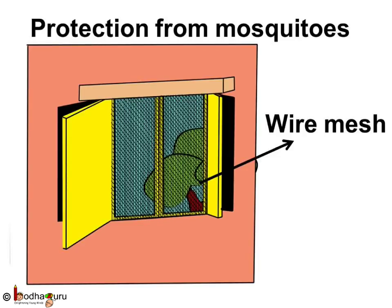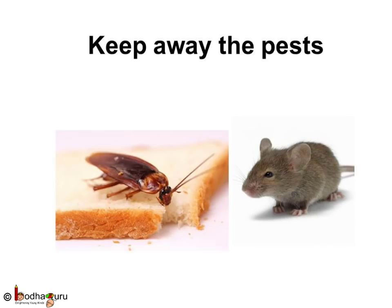Mosquitoes and house flies can make us sick. We can keep our house free from mosquitoes and flies by fixing a wire mesh on the windows. Pests like mice and cockroaches can also spread diseases. A good closed drainage system in the kitchen and the bathroom helps to keep the pests away from the house.